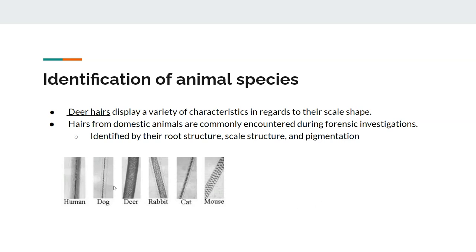For example, here is a human hair with a fragmented medulla. A dog hair has a continuous medulla that is much wider in comparison to the shaft. Deer hair, rabbit hair — the medulla is almost the whole width of the shaft. Cat hair has a bubble-like appearance and the medulla is also almost the whole width of the shaft. Mouse hair is also very unique in terms of its appearance.